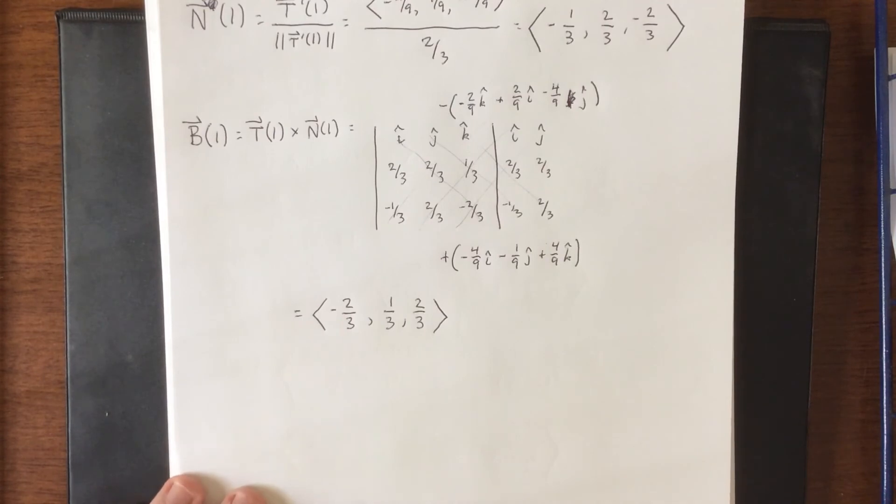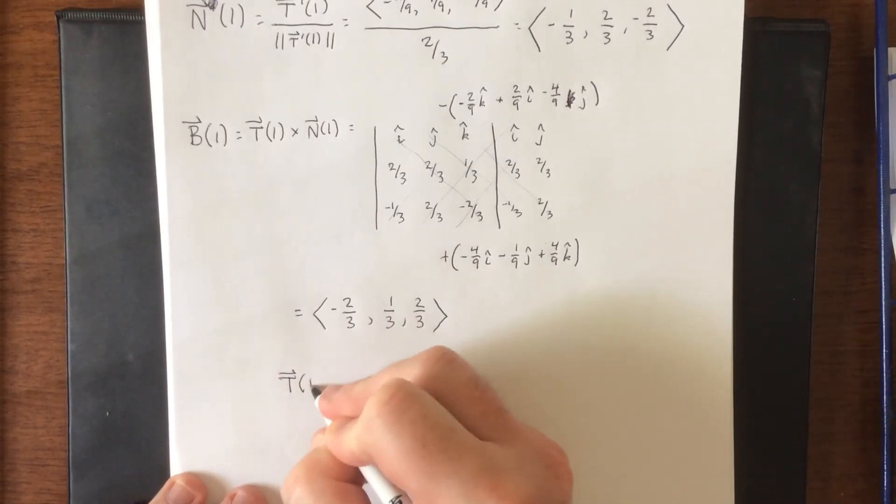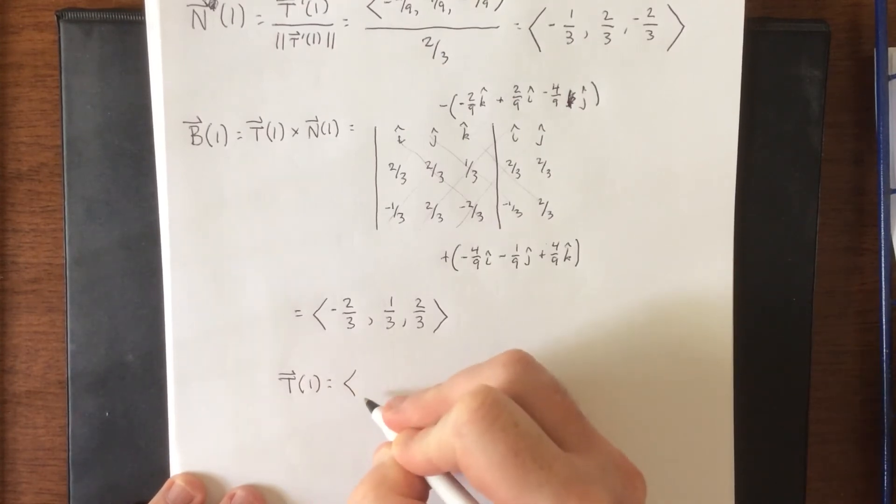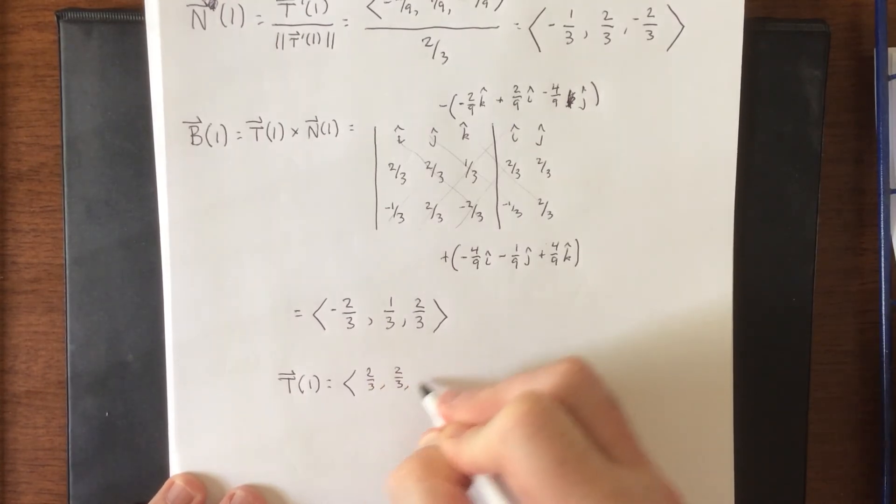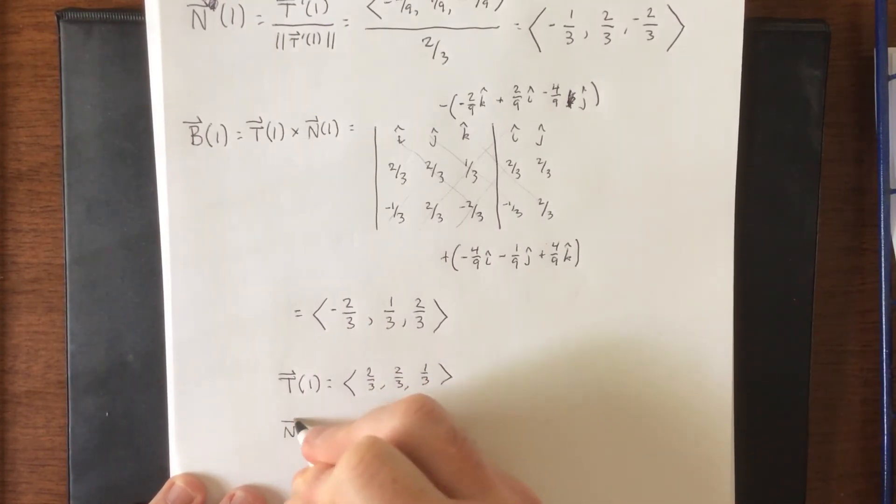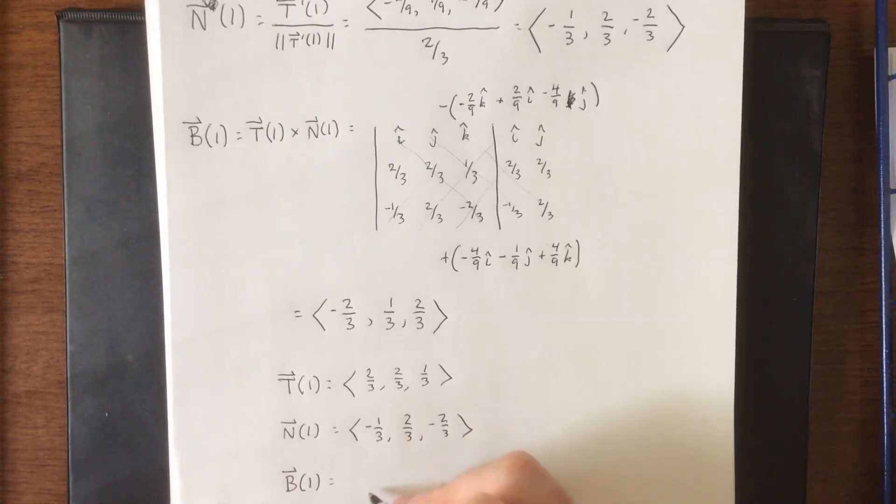Now if you want to verify your answers, you need to make sure that they are all mutually orthogonal and unit in length. Now to summarize what we just did, unit tangent vector, which again from the previous page is two-thirds, two-thirds, one-third, unit normal vector, no prime up there, that's a naughty prime, negative one-third, two-thirds, negative two-thirds, and finally the binormal vector, which we got from the cross product that we just did, that is negative two-thirds, positive one-third, and positive two-thirds.